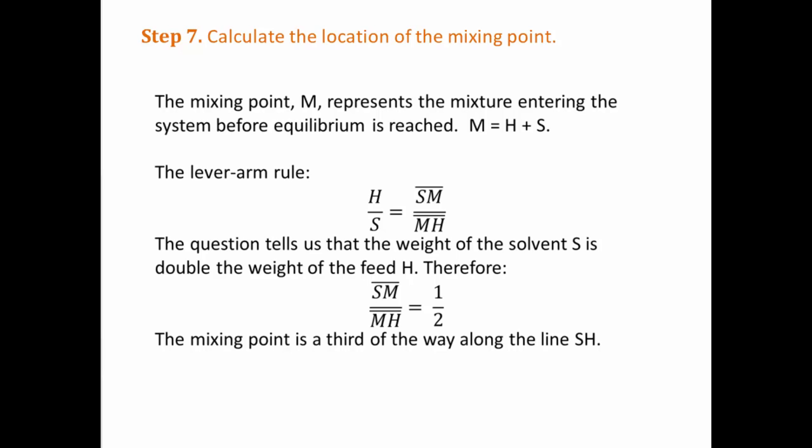From the lever arm rule, we have H over S equals the length of the line SM divided by the length of the line MH. The question tells us that the weight of the solvent S is double the weight of the feed H.